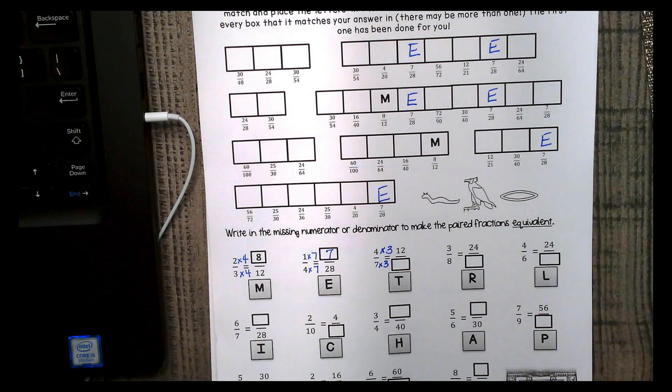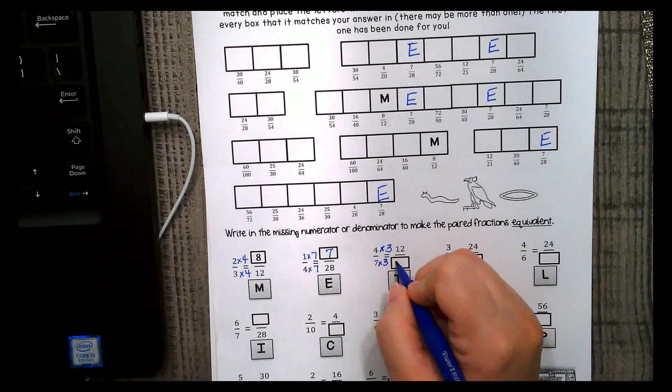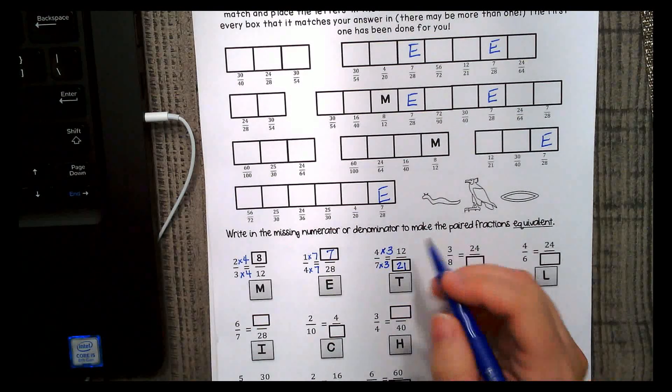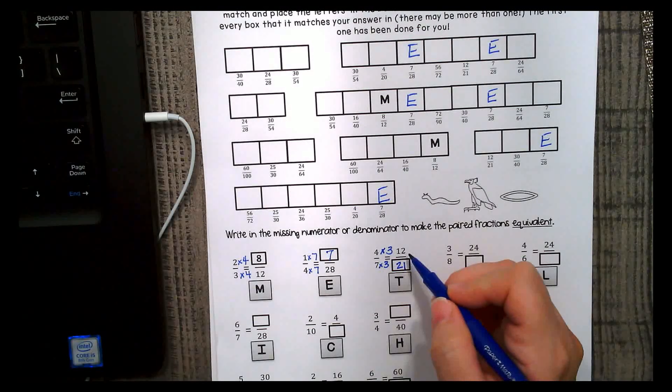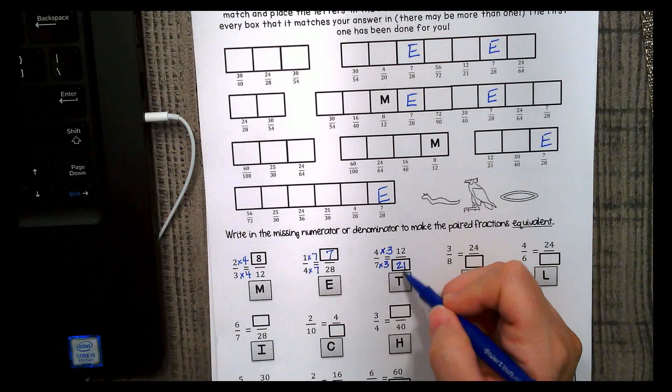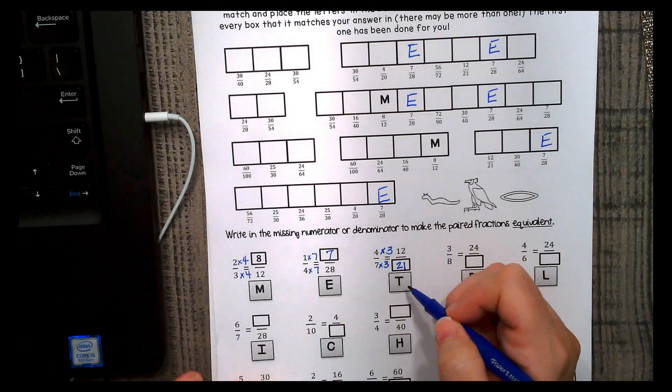3 times 7? 21. So, 4 7ths is equivalent to 12 21sts. Wherever there's a 12 21, you're going to put a T.